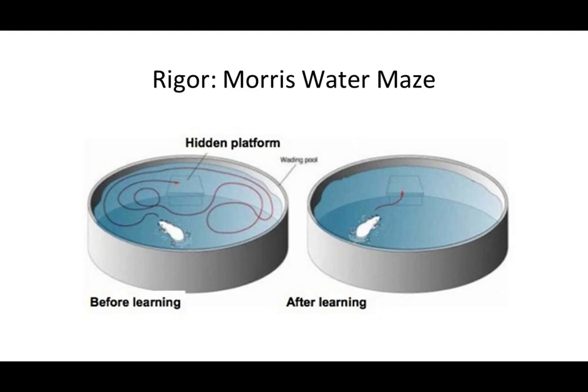A Morris water maze is essentially a big tank of water — a swimming pool for a rat or mouse. It's filled with a milky substance, usually milk powder, to make the water murky so the animal can't see a hidden platform. There's a little platform somewhere in that murky pool; you drop the rat or mouse in, and it swims around to find the platform. If it learned anything on the first trial, after a while it can find the platform faster.